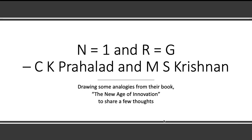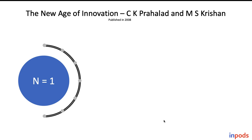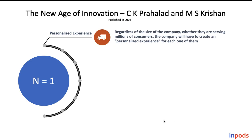I would like to anchor on the thoughts of C.K. Prahalad and M.S. Krishnan in their book, The New Age of Innovation. They explain the phenomenon of N=1 and R=G very beautifully. N=1 is nothing but personalized experience: regardless of the size of the company, whether serving millions of consumers, the company will have to create a personalized experience for each one of them.